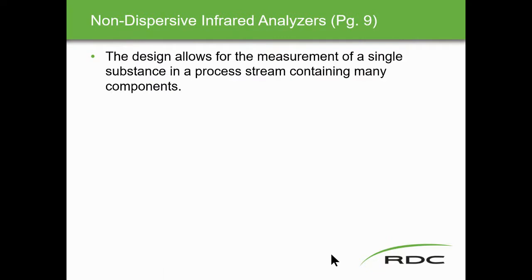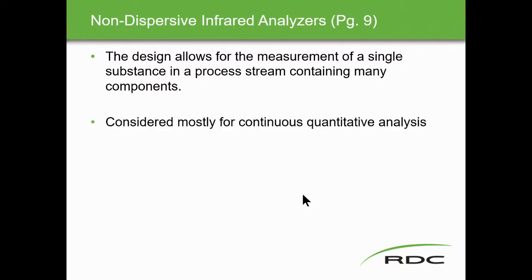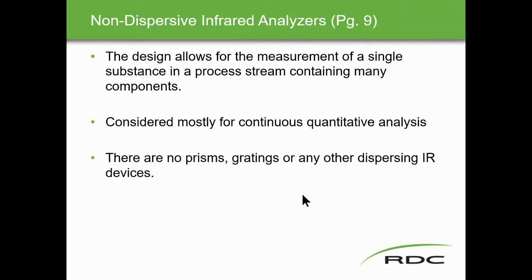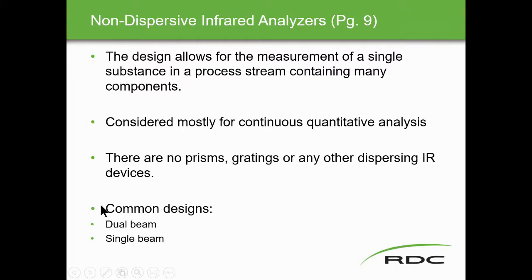Non-dispersive infrared analyzers are designed to allow measurement of a single substance in a process stream containing many components. They are most common for quantitative analysis. There are no prisms, gratings, or other dispersive IR devices on a non-dispersive infrared analyzer. Common designs are dual beam and single beam.